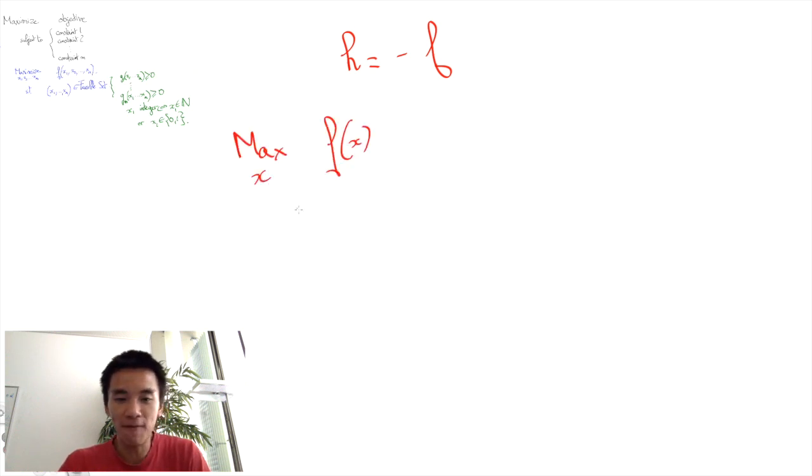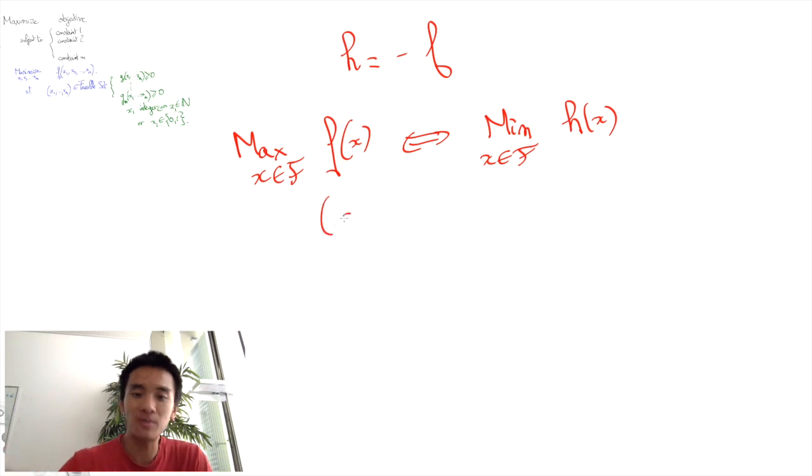The maximization of f is now equivalent to minimizing h of x under the same constraints as before. And importantly, any maximizer of the former maximization program will be a minimizer of this latter minimization program. Similarly, equality constraints can usually be written as inequality constraints.